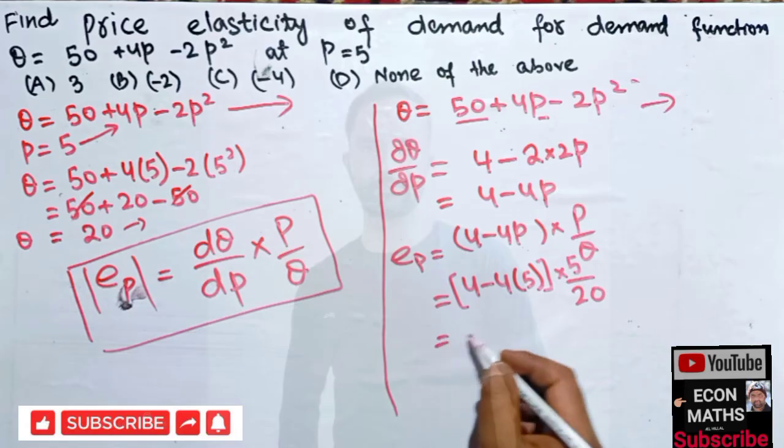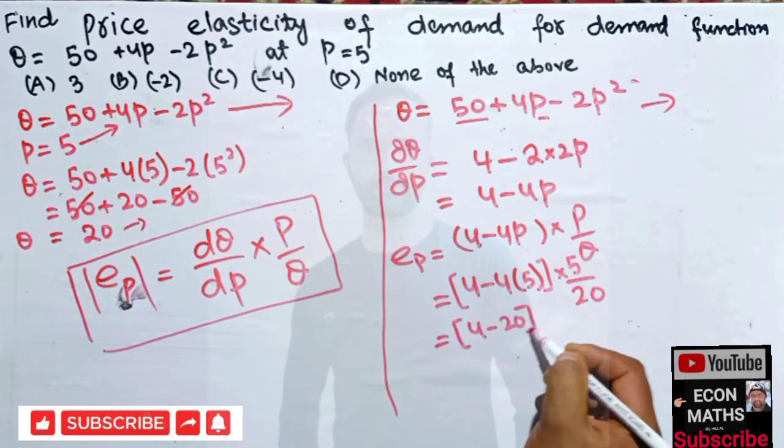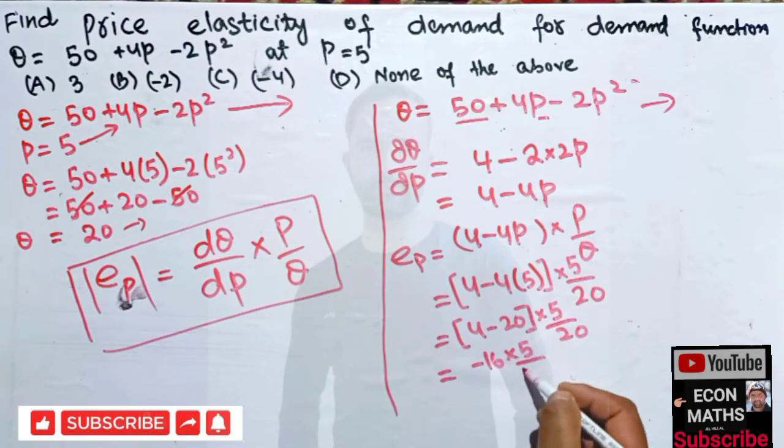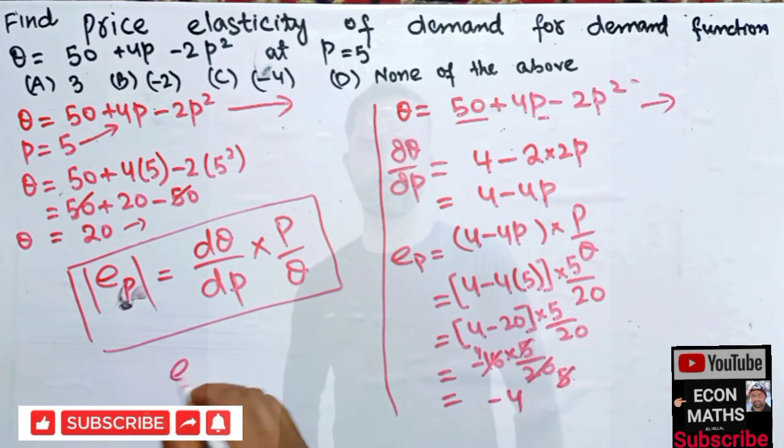When solving this will come out to be (4 - 20) × 5/20 which comes out to be -16 × 5/20. This simplifies as 5 and 5 gets cancelled, we get -4.